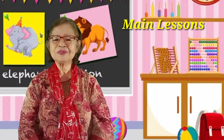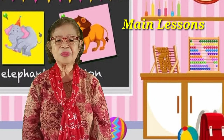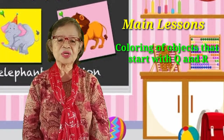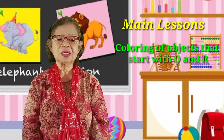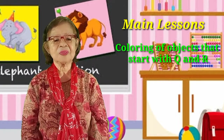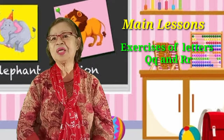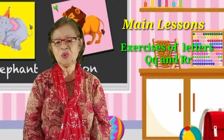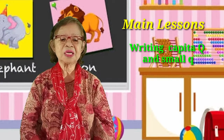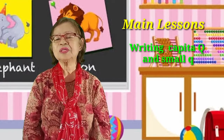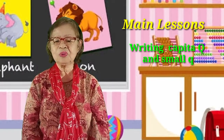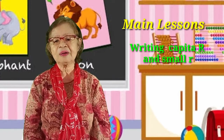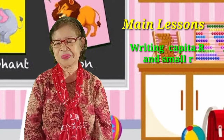Our main lesson for today: we are going to color objects that start with Q and R. And then we're going to have exercises of letters Q and R. We're going to write capital Q and small Q on the board, as well as writing capital R and small R on the board too.